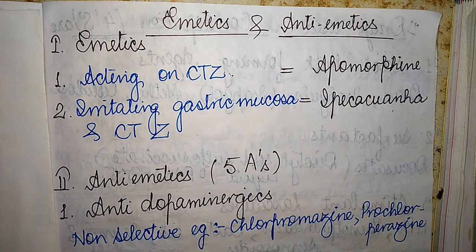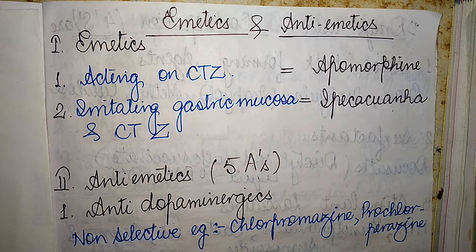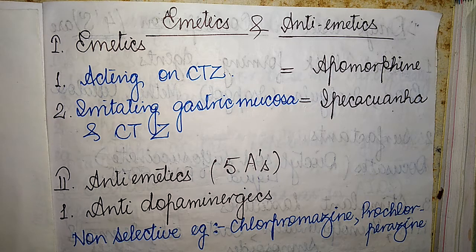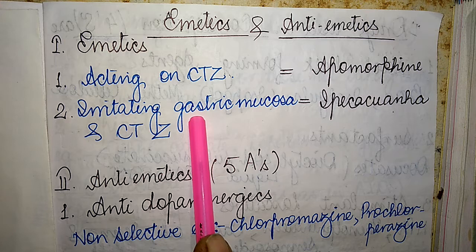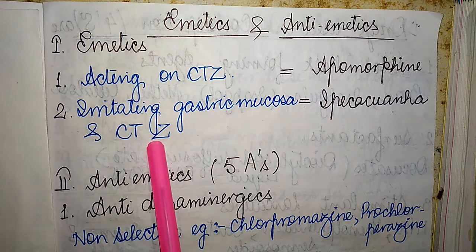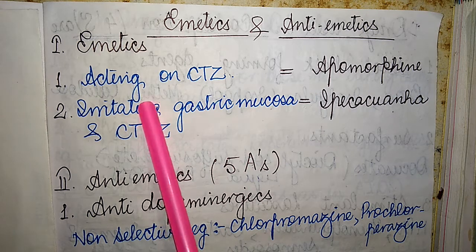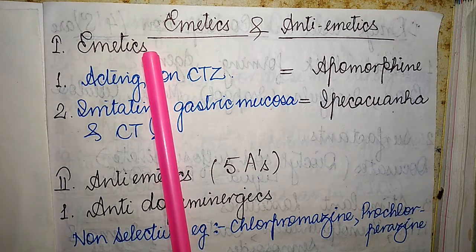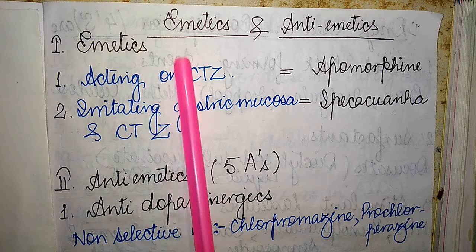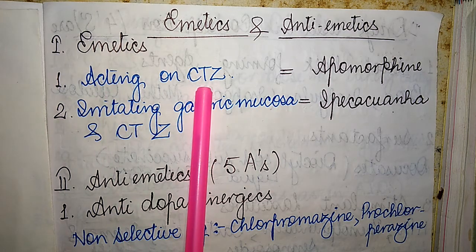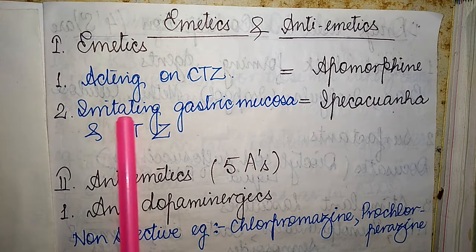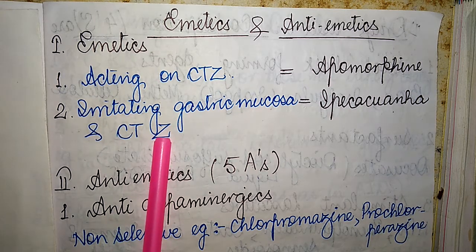Emetics are broadly divided into two categories based on their site of action. The first category includes drugs that act on the chemoreceptor trigger zone (CTZ). The second category includes drugs that irritate the gastric mucosa and the chemoreceptor trigger zone.